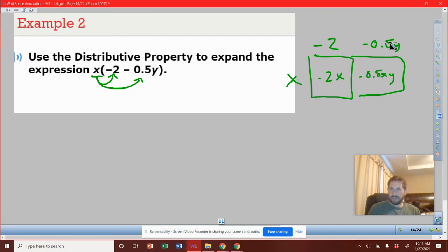So when you multiply that variable, you're just going to get an xy variable. It's still x times y. So if we did this distributive, x times negative two gets me negative 2x. X times negative 0.5y gets me negative 0.5xy.